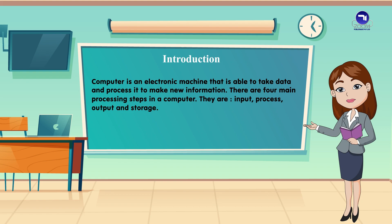Introduction: A computer is an electronic machine that is able to take data and process it to make new information. There are four main processing steps in a computer. They are Input, Process, Output and Storage.